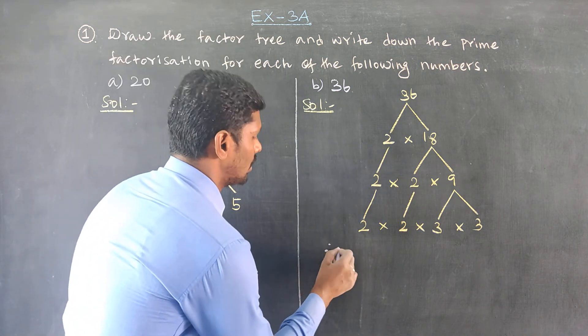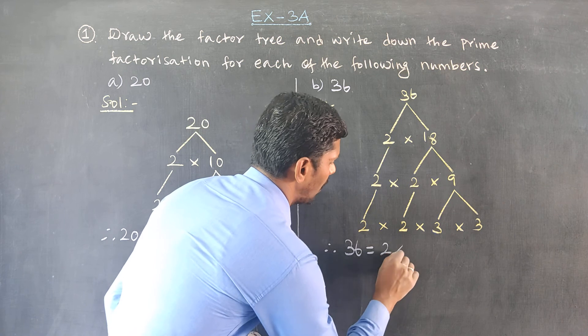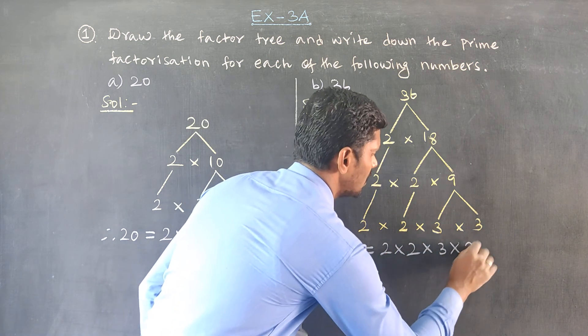Therefore, the prime factorization of 36 is 36 equals 2 times 2 times 3 times 3.